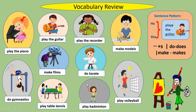Number nine, 'play badminton.' She plays badminton every afternoon. The last one, number ten, 'play volleyball.' He plays volleyball with his friends. So the sentence pattern is: he or she — you add S. But with 'do' it becomes 'does,' and 'make' becomes 'makes.' Except if there are two or more people, you don't add S.